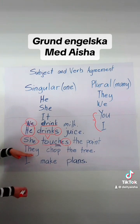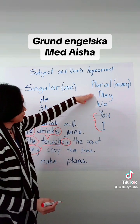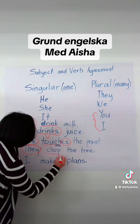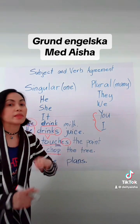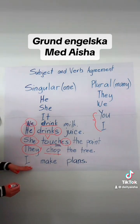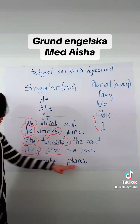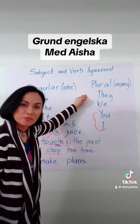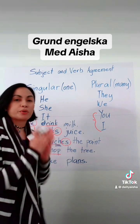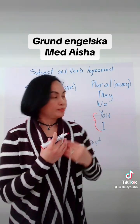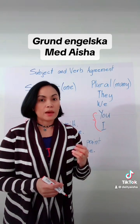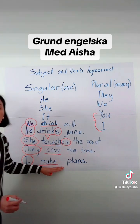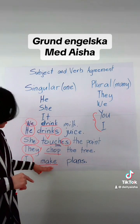Now here, they — they is plural. They chop the tree. So you can see chop without s or es, because they is plural. I make plants. Your subject here is I, which is the plural form of pronouns — it is the first person. That is why it is considered as plural, so you don't need to add s. No s in your verb.